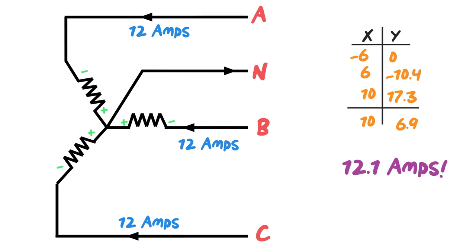So I use Pythagoras's theorem. 10 squared plus 6.9 squared equals 12.1 squared. That's a 1 not a 7. 12.1 amps. That's what's going to be on my neutral.